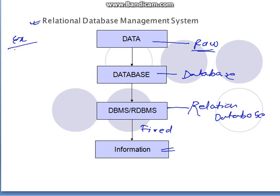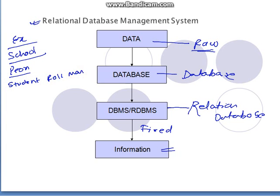We understand better by taking examples. For example, if you have a school and someone is told to collect the student name, roll number, marks, and address — he collected all the data randomly. He went on the playground where the children were running here and there, and he called up all the students step by step.